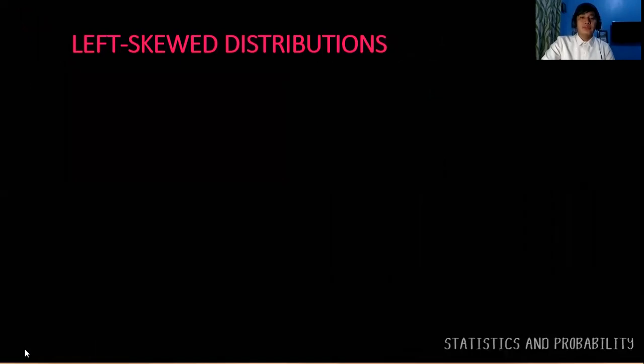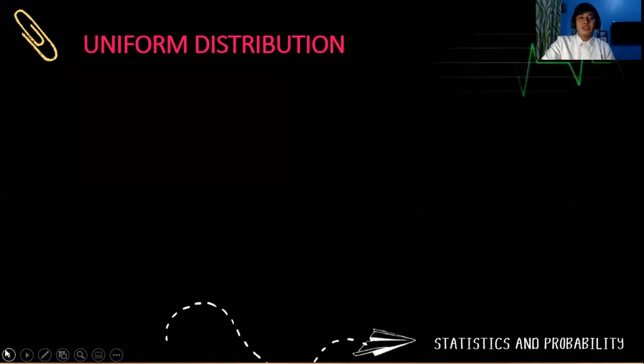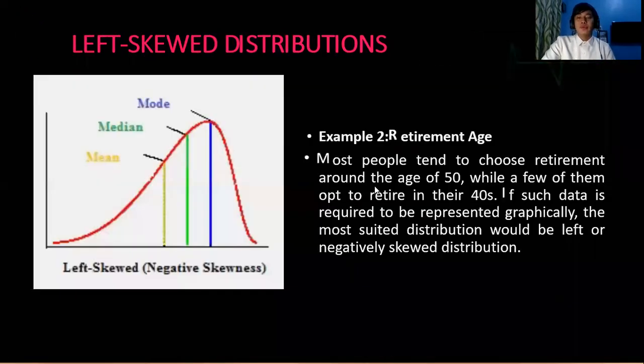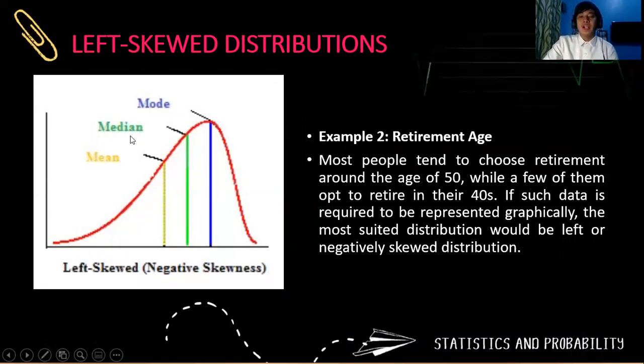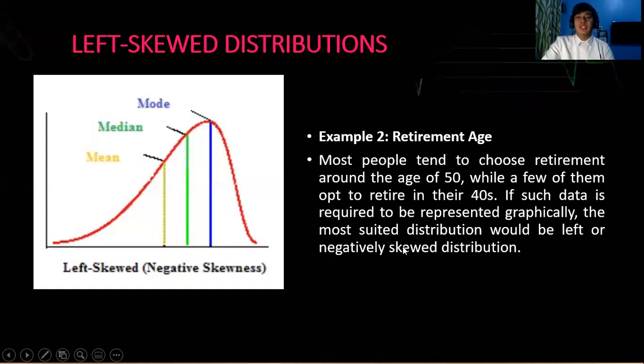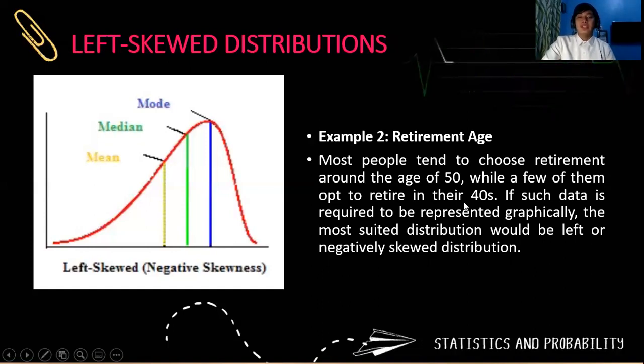Another example is the retirement age. Most people tend to choose retirement around the age of 50, while a few opt to retire in their 40s. So if such data is required to be represented graphically, the most suited distribution would be the left or the negatively skewed distribution. Of course, you will not retire on an early age. Instead, 50 or above, you can already retire and enjoy your pension.